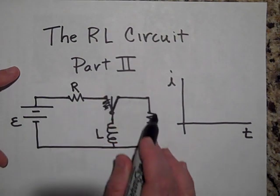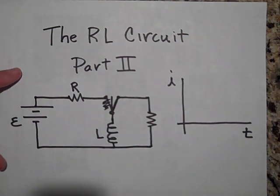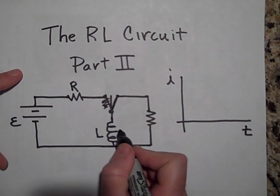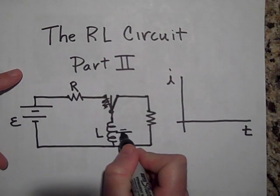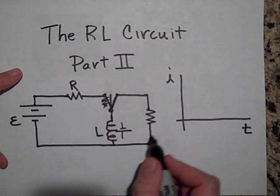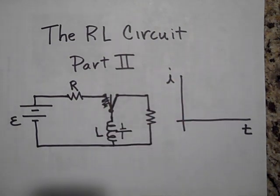But what will happen is, as the current starts to die out, this is going to try and stop that from happening by pushing the current like this. And you're going to get a current that goes around like this. I'd like you to see how you derive the equation for how I changes with time.